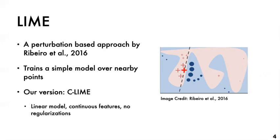In our paper, we study a variant of LIME, which we call continuous LIME, or CLIME for short. Compared to the general formulation of LIME, CLIME uses a linear model with no regularization and also does not discretize the feature space. You can find more details about CLIME in our paper.